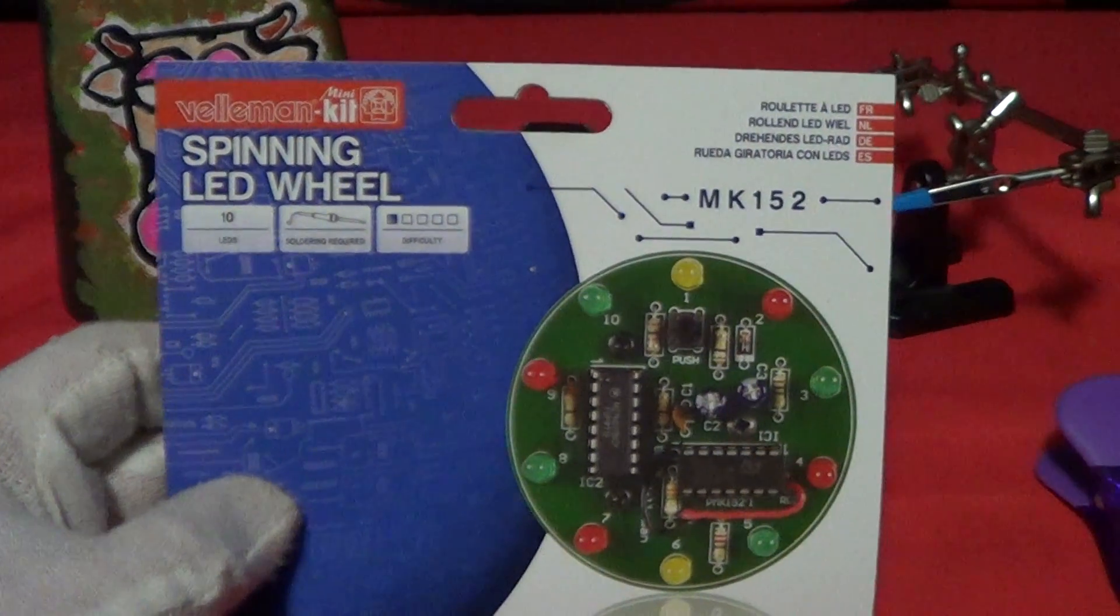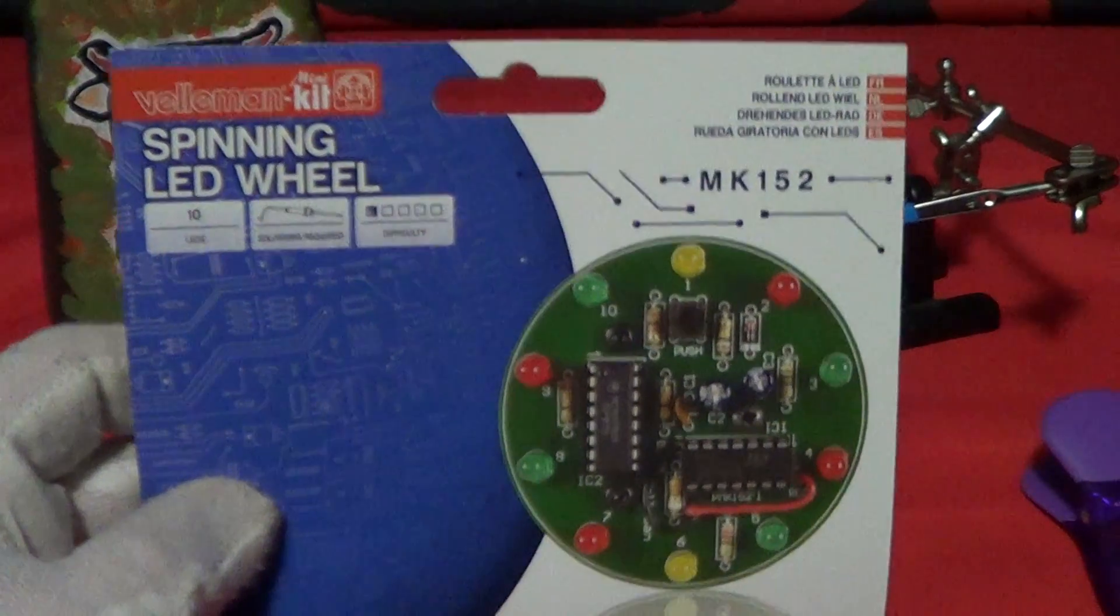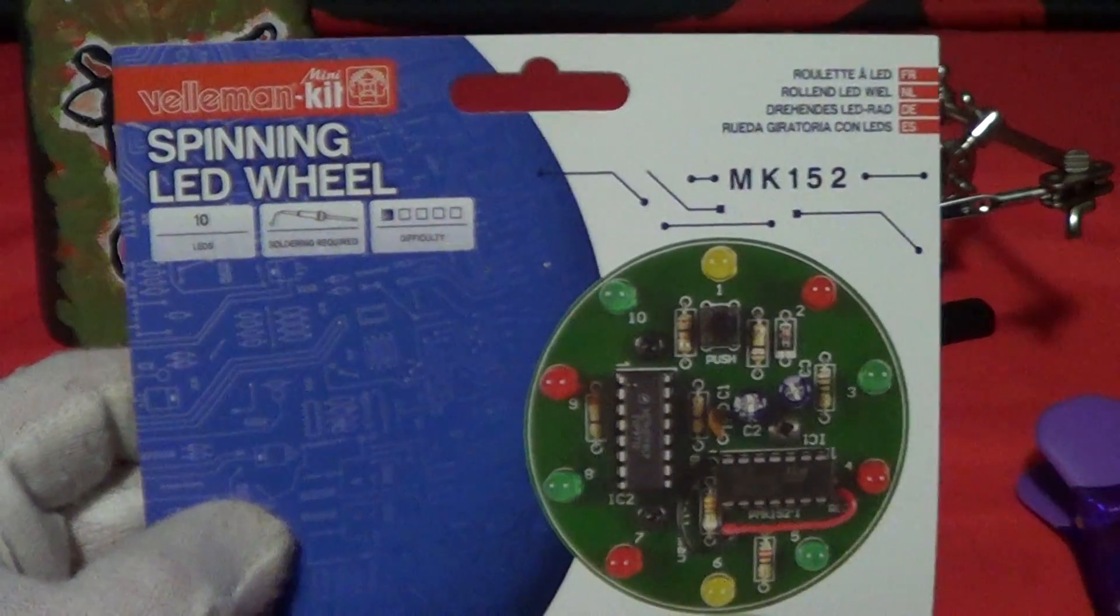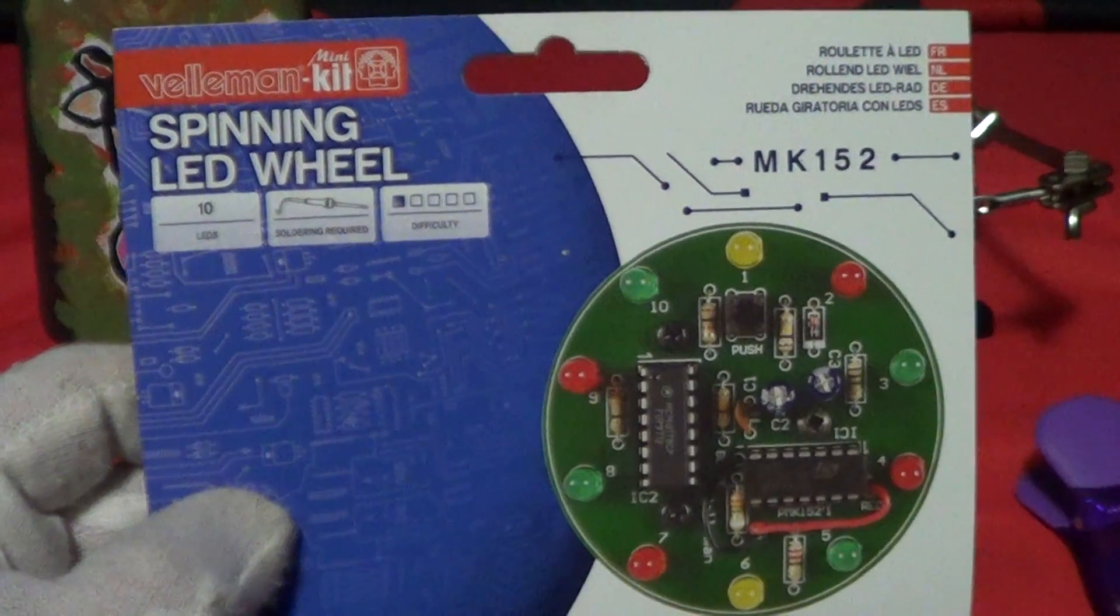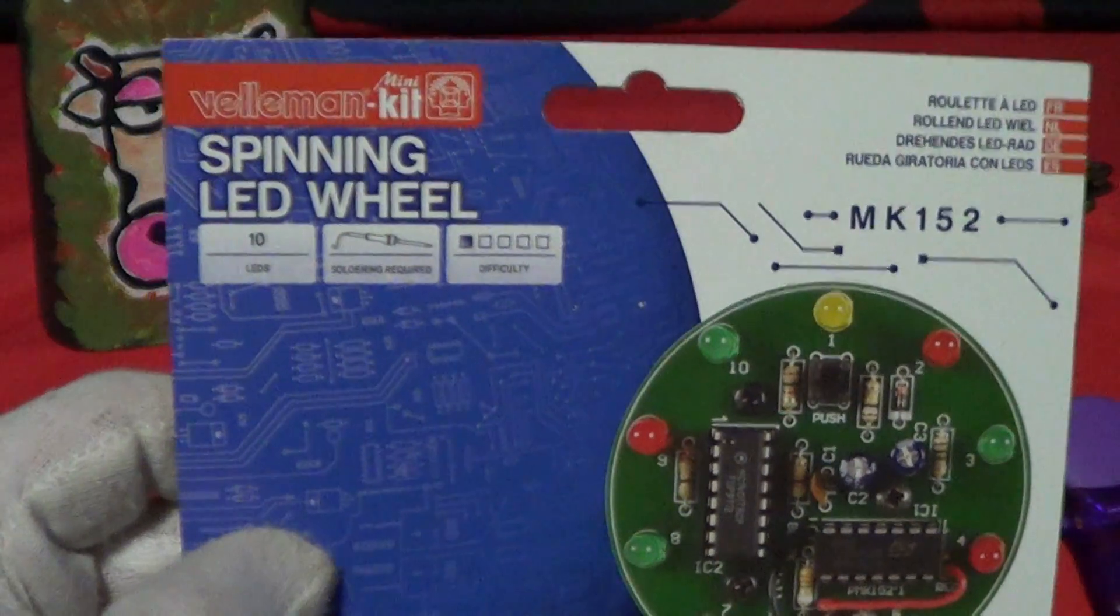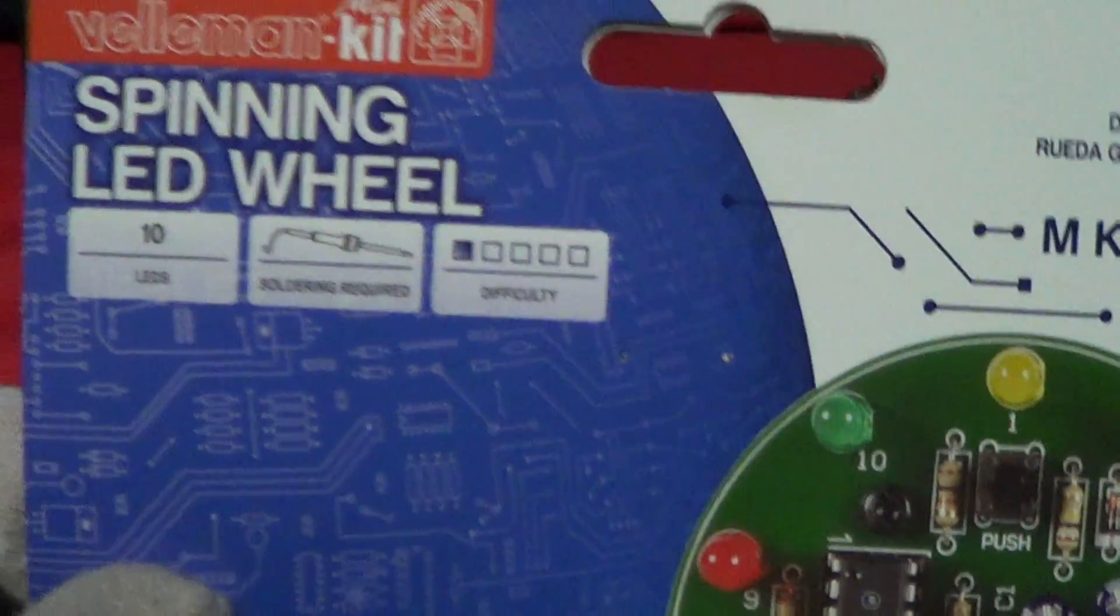I'm going to do a short review on another little electronics project. This one is the Velleman mini kit and it's called the spinning LED wheel. You can see the difficulty is very low. It does require soldering and there are 10 LEDs in this kit.